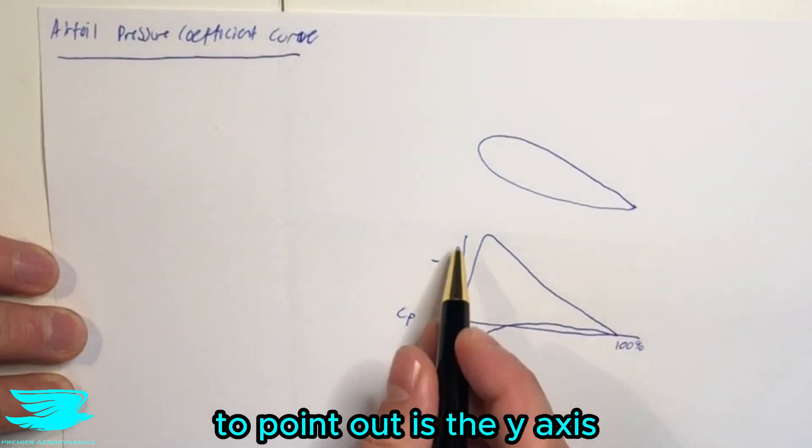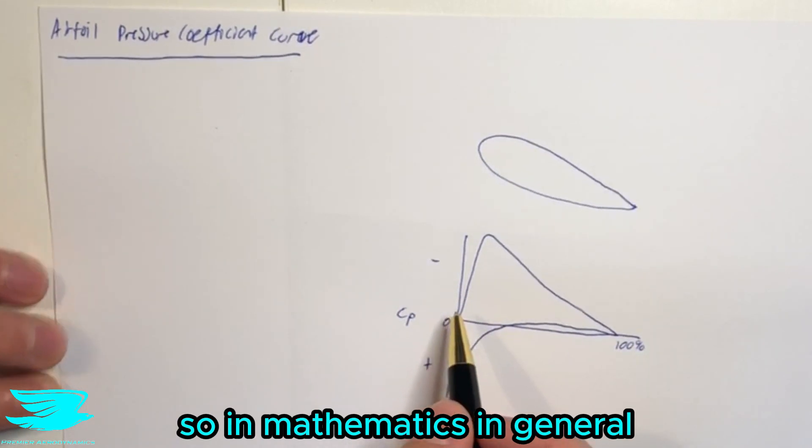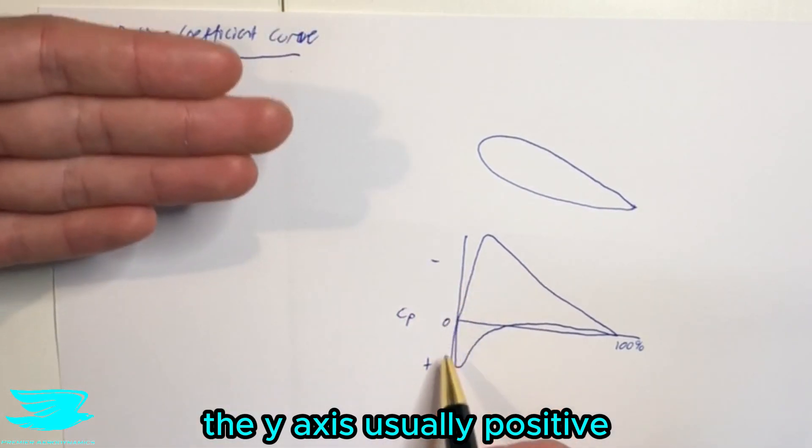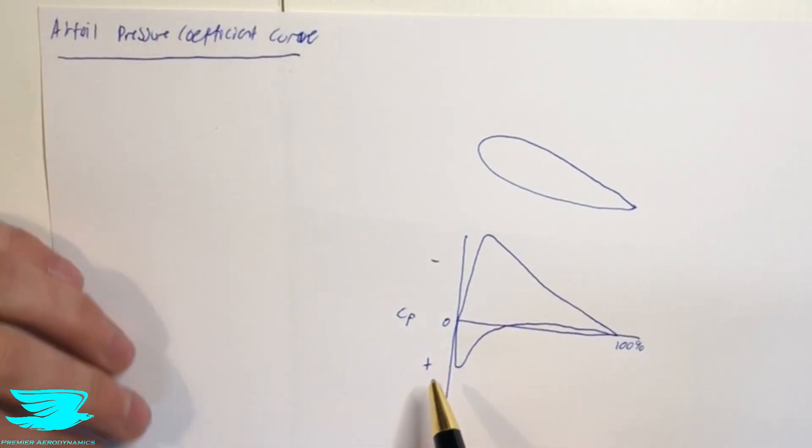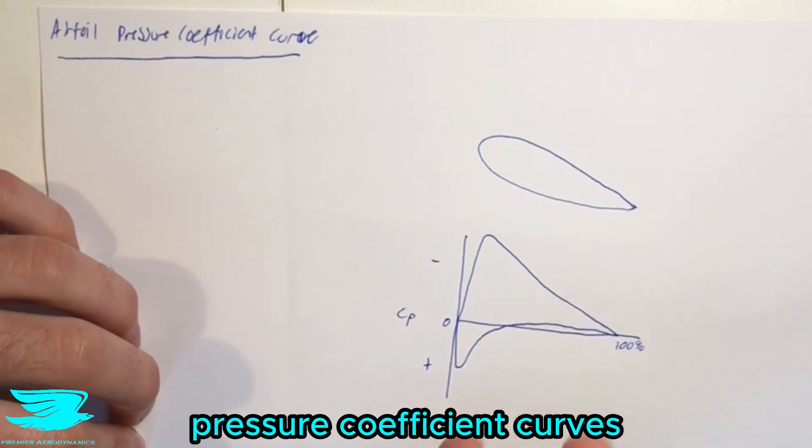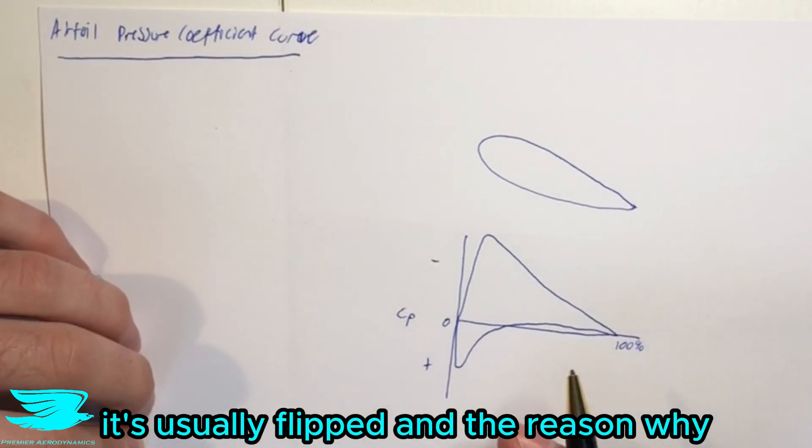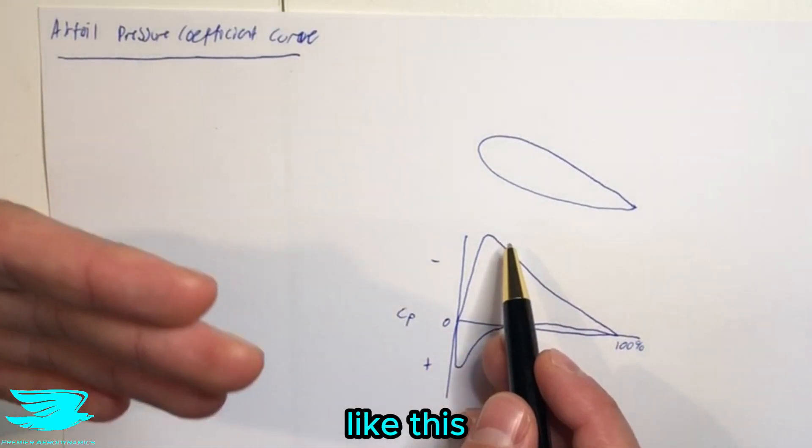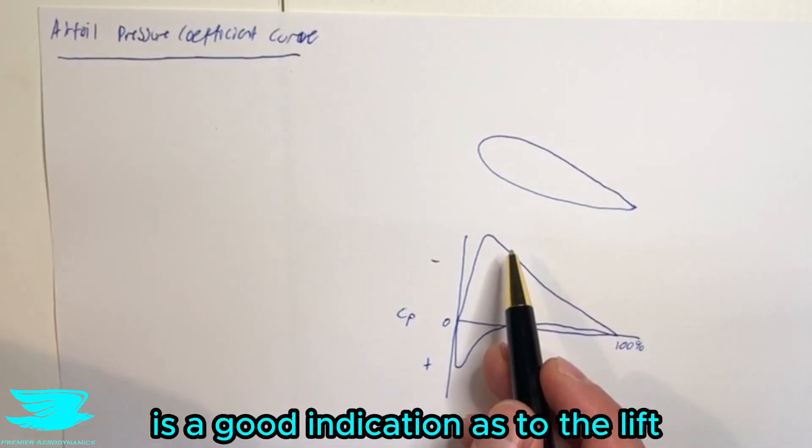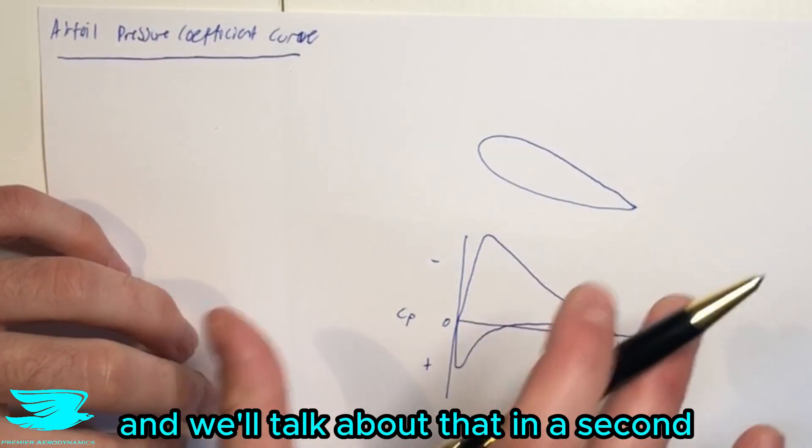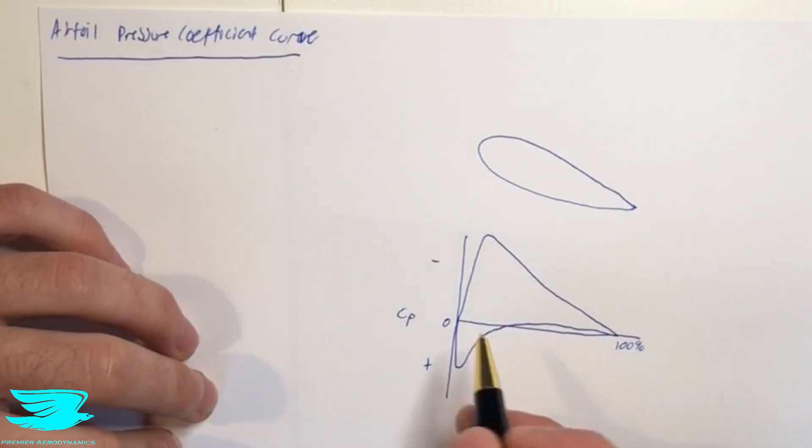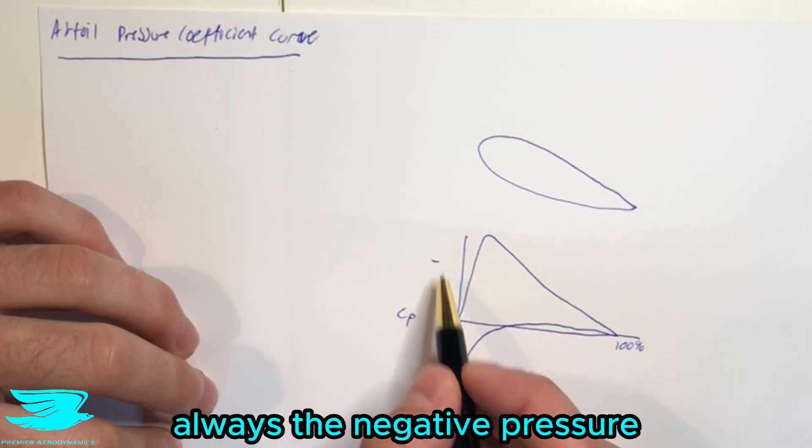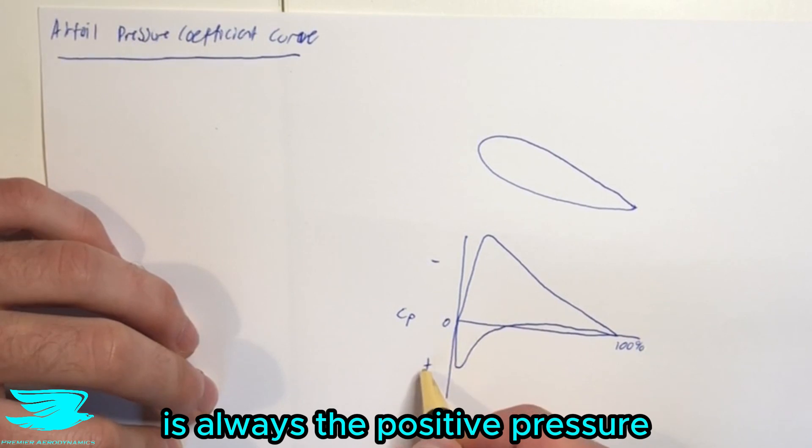Now, one thing I really need to point out is the y-axis. So in mathematics in general, we have the upper part of the y-axis usually positive and the lower part negative. But when we draw airfoil pressure coefficient curves, it's usually flipped. And the reason why is because we always really want to figure out what the lowest pressure is over the airfoil because that gives us a good indication as to the lift really being produced.